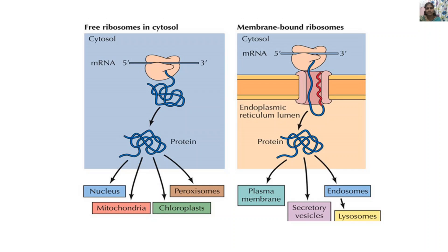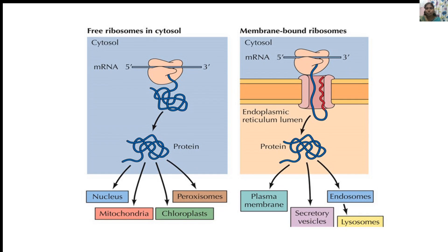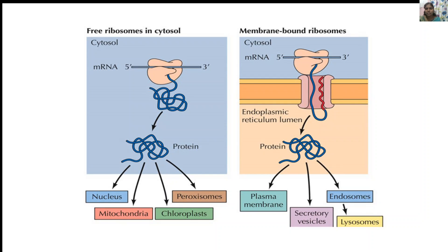Protein modification involves heat shock proteins called chaperones. The mRNA attaches to the ribosome, and the emerging new protein undergoes modification to form a mature protein. In prokaryotes, modification takes place via chaperone molecules. These proteins have roles in the plasma membrane, secretory vesicles, and lysosomes. In eukaryotes, proteins may reach the nucleus or peroxisomes, chloroplasts, or mitochondria.